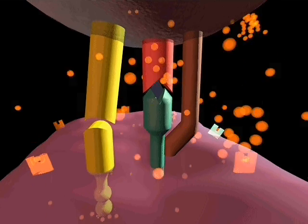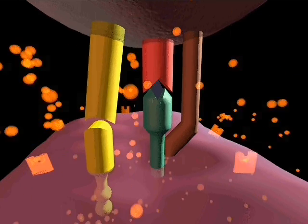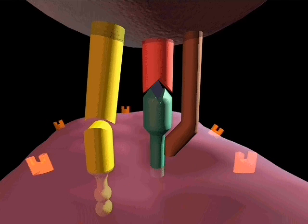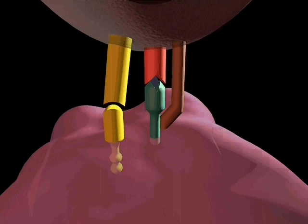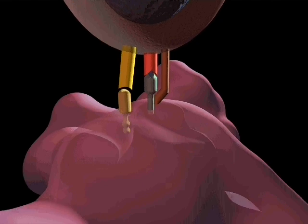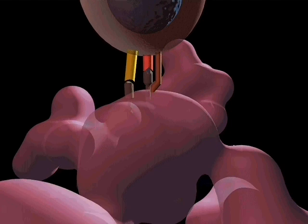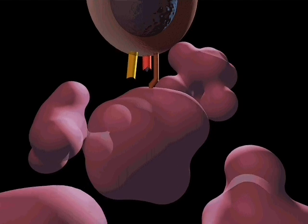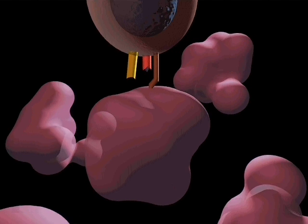Perforin or granzymes may contribute to target cell destruction. Any of these alone or in combination may instruct the infected cell to die. This mechanism, using the MHC class I protein, is called the class I pathway.